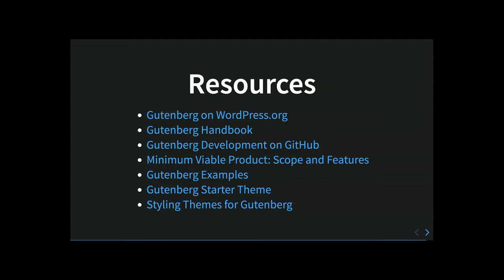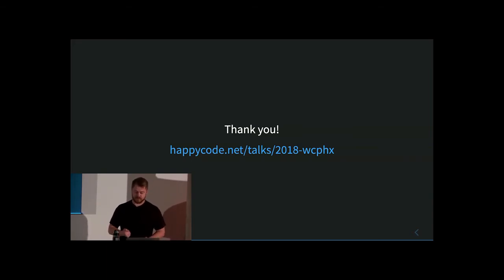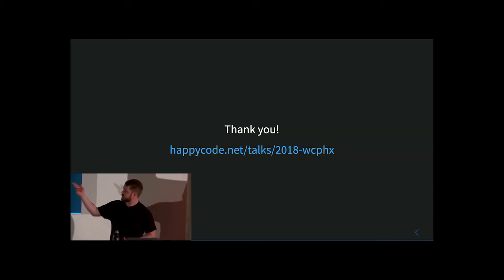Here are some resources — this is more for people who want to look at the slides later. There's a good Gutenberg handbook on wordpress.org, Gutenberg development on GitHub, a link to the minimum viable product issue on GitHub, some good examples, a Gutenberg starter theme that's starting to explore how themes can best leverage Gutenberg features, and an article about someone's experience styling themes for Gutenberg. Thank you so much for coming to my talk — here's where you can find the slides. Are there any questions?